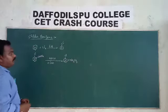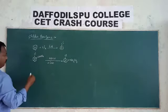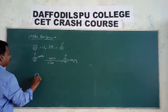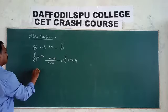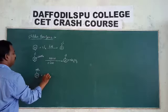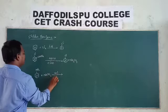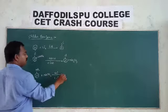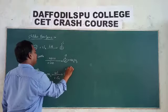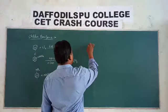Next, preparation of chlorobenzene from diazonium salts. We react with sodium nitrite and HCl at 0 to 5 degrees centigrade to get diazonium chloride.